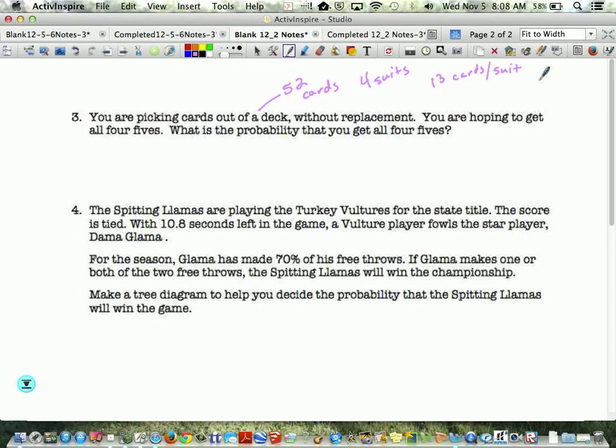First of all, we have to know how many fives are in the deck—four. So on that very first pick, what's my probability of getting a five? Four out of 52. I have a 4/52 chance of getting a five. Now, what's next? So if I did get a five, what's the probability that I get a five on the next draw? Three out of 51.